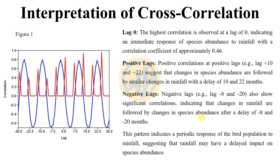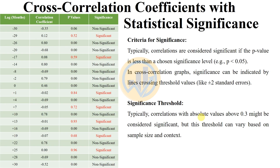These patterns indicate a periodic response of bird populations to rainfall, suggesting rainfall may have a delayed impact on species habitat. In the table of cross-correlation coefficients with statistical significance, columns list the lag in months from minus 30 to plus 30, the correlation coefficient values, and the p-values — where the crossing of the blue and red lines on the graph corresponds to the table values.